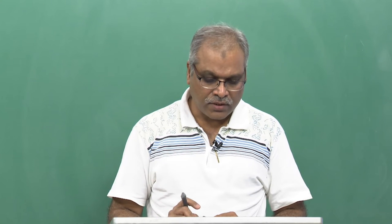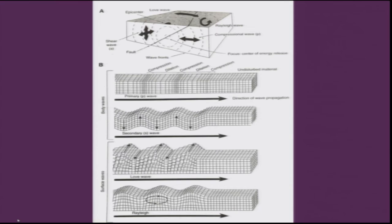Yesterday we discussed different types of seismic waves — mainly body waves and surface waves — and their typical characteristics. P waves are compressional waves that can pass through all media, whereas S waves are transverse waves that can only pass through solids. Love waves and Rayleigh waves are surface waves: Love waves move the land side by side, while Rayleigh waves have an elliptical motion. In short, we experience all types of motion during an earthquake.